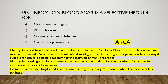This formulation includes neomycin, which inhibits most gram-positive and gram-negative aerobes, making it suitable as a selective medium for isolation of many anaerobes. Neomycin blood agar is also commonly used for isolation of vancomycin-resistant enterococci. Bacteroides fragilis and Clostridium perfringens show gray colonies, while Escherichia coli is inhibited by neomycin.